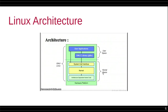In Linux architecture, we have two modes: user mode and kernel mode. In user mode, we have the user space, which contains user applications and the GNU C library. When you make any call, it goes to the system interface. The system code is then forwarded to the kernel, and the kernel further processes it to the hardware platform.